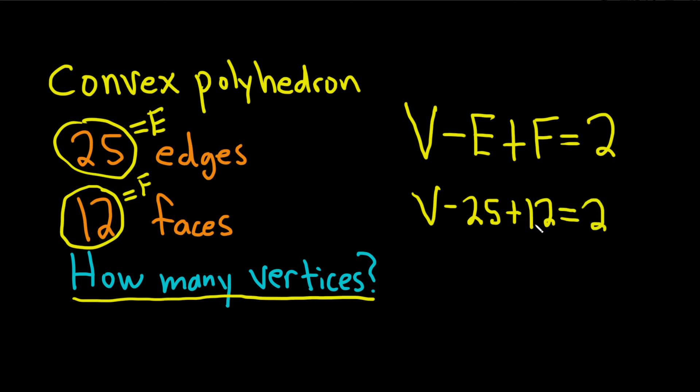So negative 25 plus 12 is negative 13, and that's equal to 2. And then we can just add 13 to both sides and we end up with V equals 15.